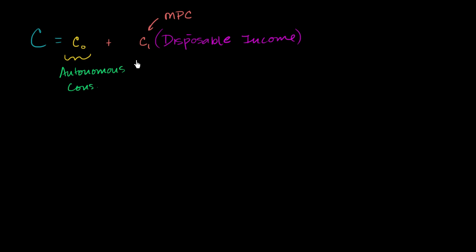This makes intuitive sense: if C0 is 100, people consume 100 billion regardless. If the marginal propensity to consume is one-third and people have disposable income of 900, they want to consume a third of that disposable income. So they consume one-third of 900 — that's 300 billion of induced consumption.